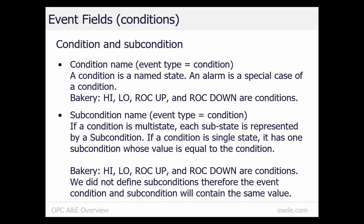The condition and subcondition tell you what condition or alarm occurred. The condition is a named state, and alarms are considered a special case of condition. In our bakery, high, low, rate of change up, and rate of change down are single state conditions. The main purpose of a subcondition is to allow conditions that are mutually exclusive to be represented as one condition with multiple subconditions. High and low are mutually exclusive and could be represented as a condition named multilevel with subconditions high and low. If a condition is single state, the condition will have one subcondition whose value is equal to the condition, so you always have a subcondition value even if subconditions are not explicitly defined.